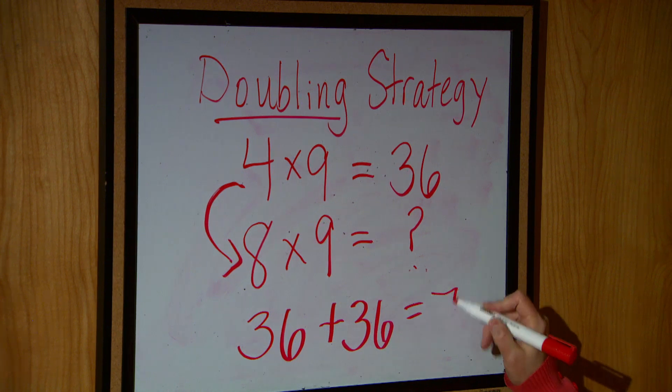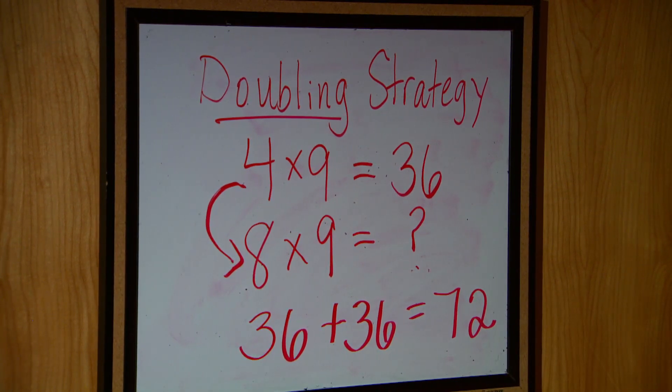So 36 plus 36, we would get a product of 72.